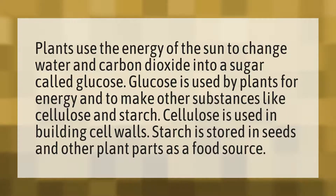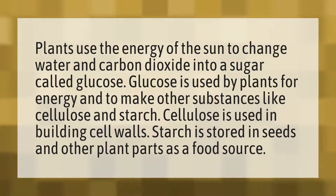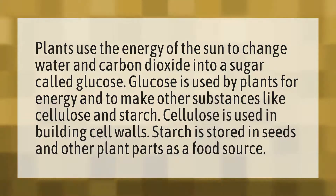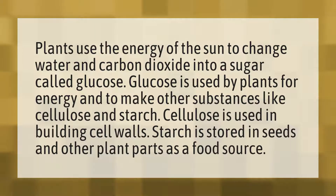Plants use the energy of the sun to change water and carbon dioxide into a sugar called glucose. Glucose is used by plants for energy and to make other substances like cellulose and starch.